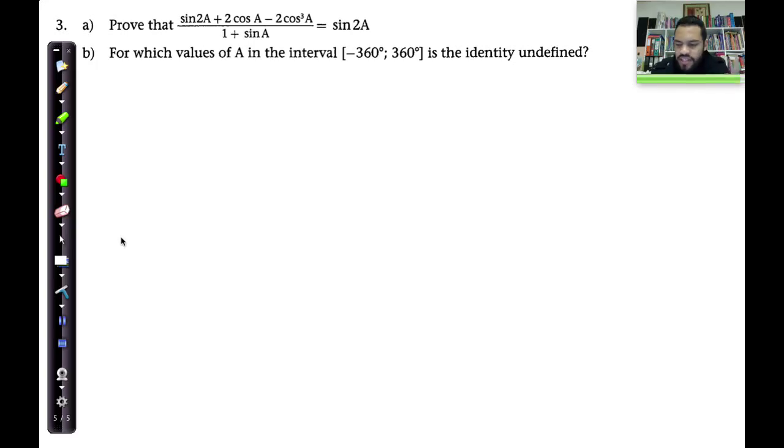Here's question number three, and there's two or three things that we need to tackle here. What exactly does this type of question identify or deal with? It says prove that sin2A + 2cosA - 2cos³A all over 1 + sinA is equal to sin2A. Now, the things involved here, number one is identities. This is saying we need to work with proving identities.